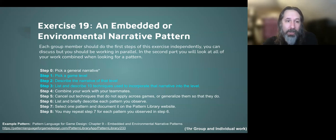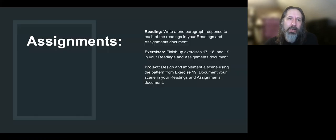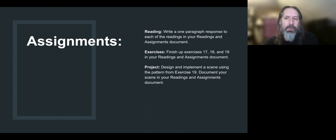Then we're going to do the embedded environmental narrative pattern. This one will be slightly different — you'll do steps one through three alone, then steps four through eight together after your group picks the general narrative you're going to talk about. Pattern library number 233 is the example; you can look that up in Chapter 9. Your assignments as usual will be to write one paragraph in response to the readings for the week, finish exercises 17 and 18, finish your pattern for exercise 19 and enter it into the library, and then do your design — implementing texturing and lighting and trying to demonstrate the different parts of the level based on what you come up with from exercise 19.